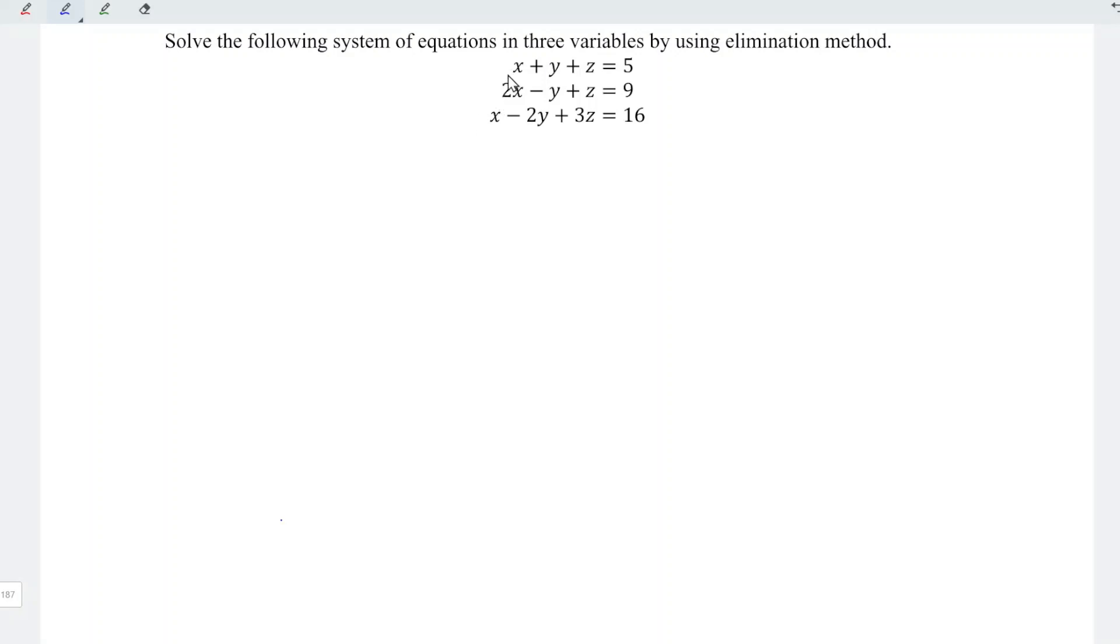As we can see, for the second equation, the coefficient of x is equal to 2 as compared to the first equation, which is equal to 1. In order for us to eliminate the variable x, we can actually take the first equation times 2.